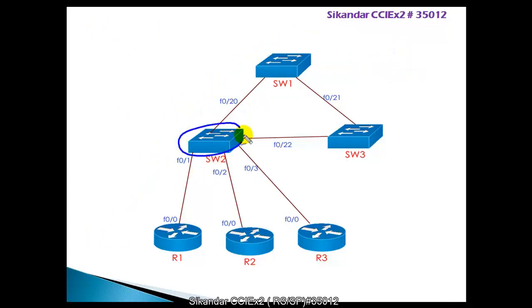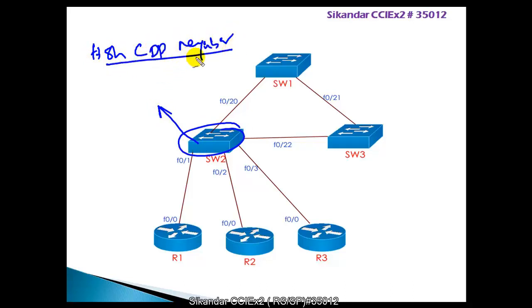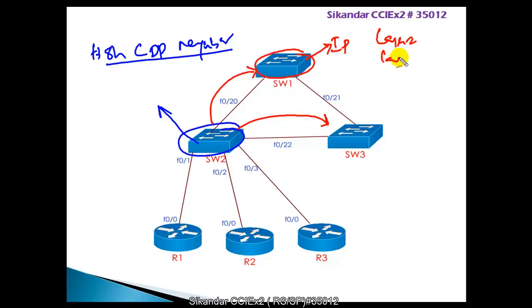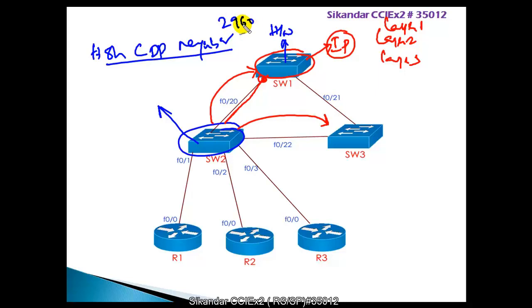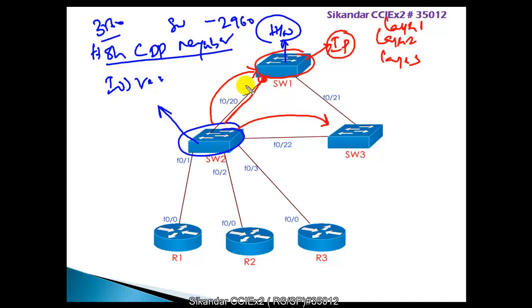By default, CDP runs on all interfaces. You can go to any device and give the command 'show CDP neighbors.' This command provides information about neighbor devices — their hostname, layer 1, layer 2, and layer 3 information. It shows which local port you're connected on, what the remote port is, the IP address, MAC address, and even hardware details like the platform model — for example, a 2960 or 3560 switch — and the IOS version.